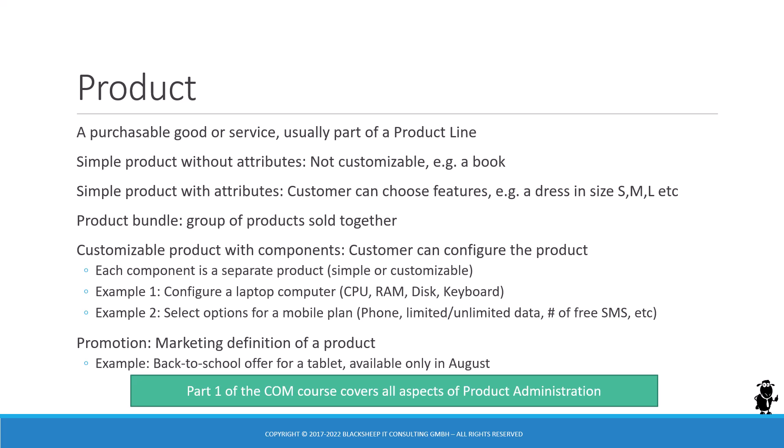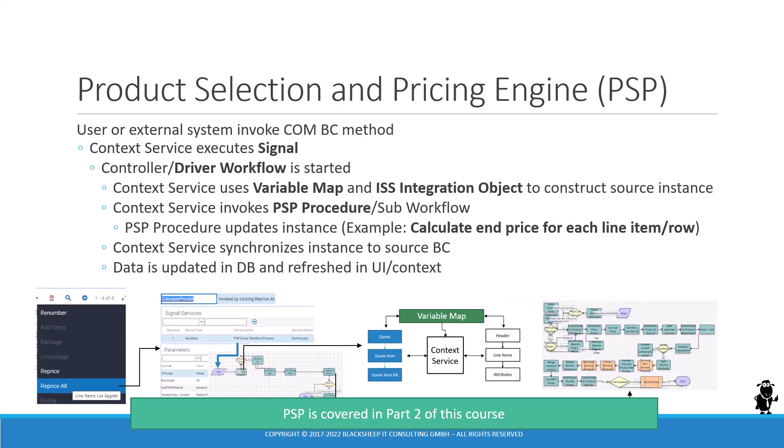In this upcoming course we focus on the pricing part. If you want to learn more about product administration, make sure to take part one of the Customer Order Management course. The second part, COM Infrastructure, covers in great detail all aspects of the product selection and pricing engine, and is a very recommended prerequisite for part three — the pricing administration — to understand the technicalities of how the end price for each line item of a quote, order, or agreement is calculated.